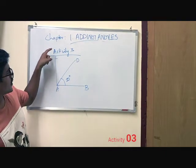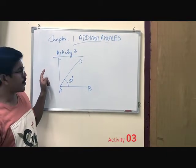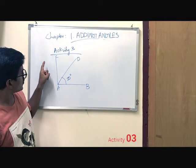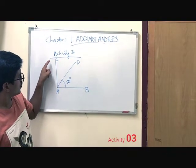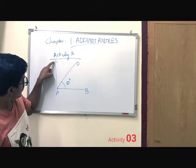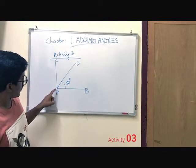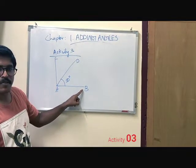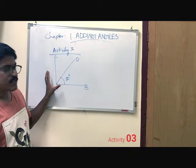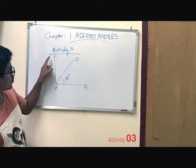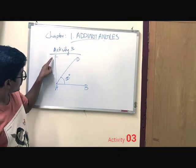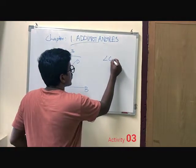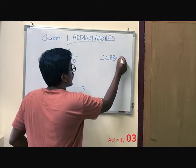We can move on to the next activity. Here also we have to find out the angle measurements. One speciality in this figure: you can see that line C, A and line A, V are perpendicular. We already discussed that the angle between perpendicular lines is 90 degrees. So angle C, A, V equals 90 degrees.